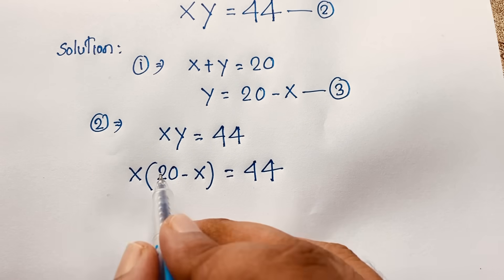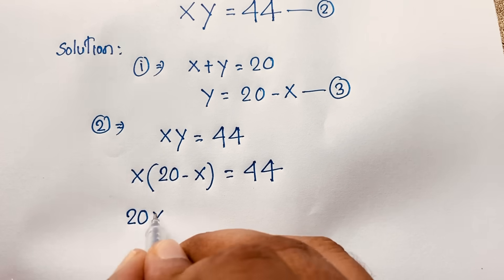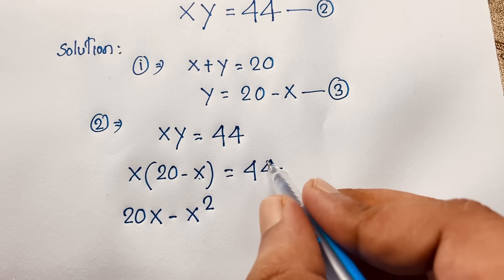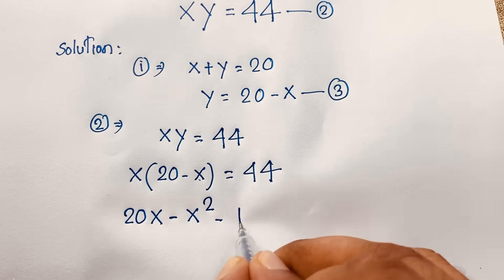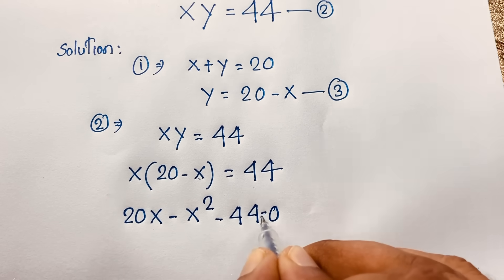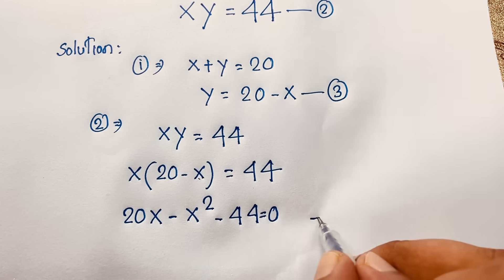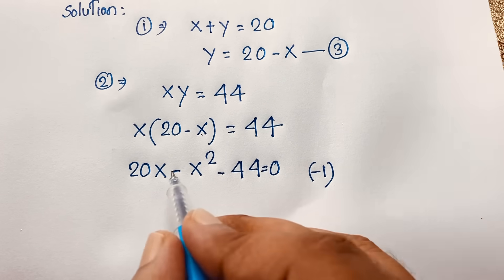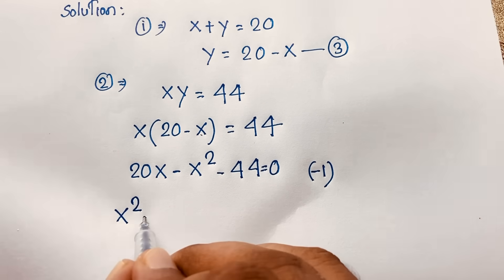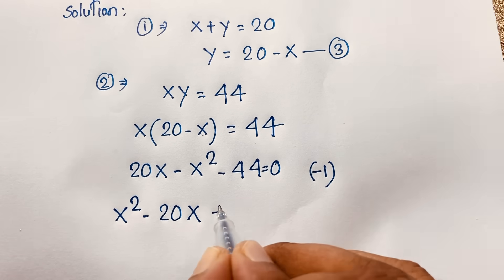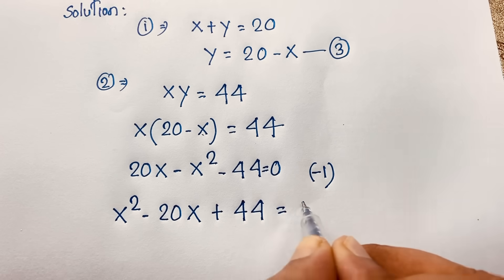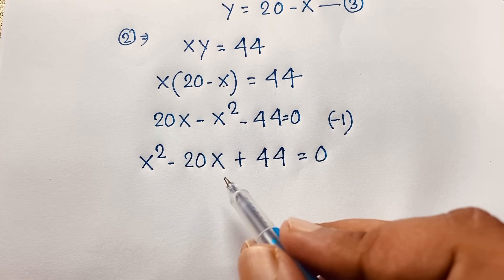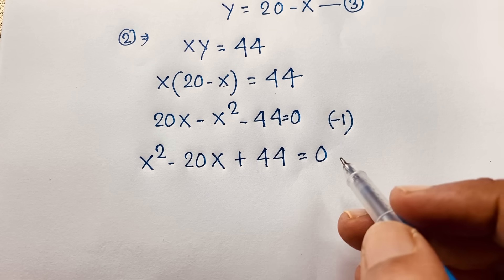Expanding this expression: 20 times x gives 20x, minus x times x gives x squared. Moving 44 to the left side makes it negative 44 equals zero. Multiplying both sides by negative one: x squared minus 20x plus 44 equals zero. We now have a nice quadratic equation: x squared minus 20x plus 44 equals zero.